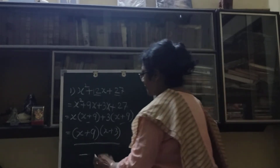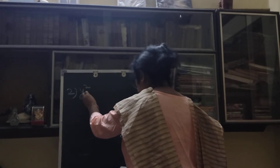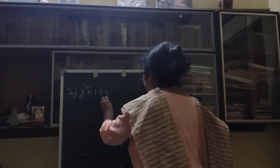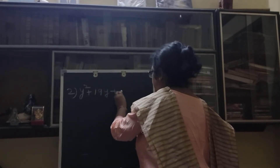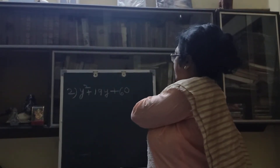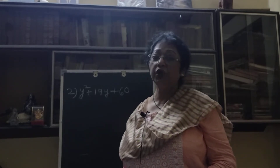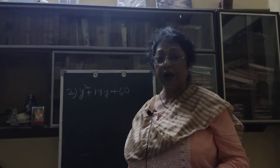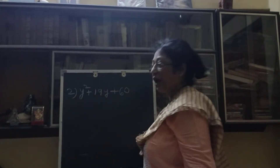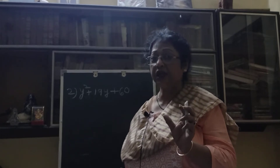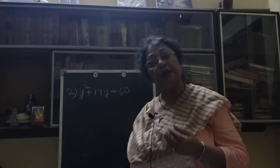Okay children, if you do not understand, definitely tell me, I will explain you. Next one I am taking: y square plus 19y plus 60. Now see, children: 60 is there and our middle term is 19. We have to find out the factors by which if we add or subtract we get 19. Here both signs are plus, so we will take two numbers that when added give 19.